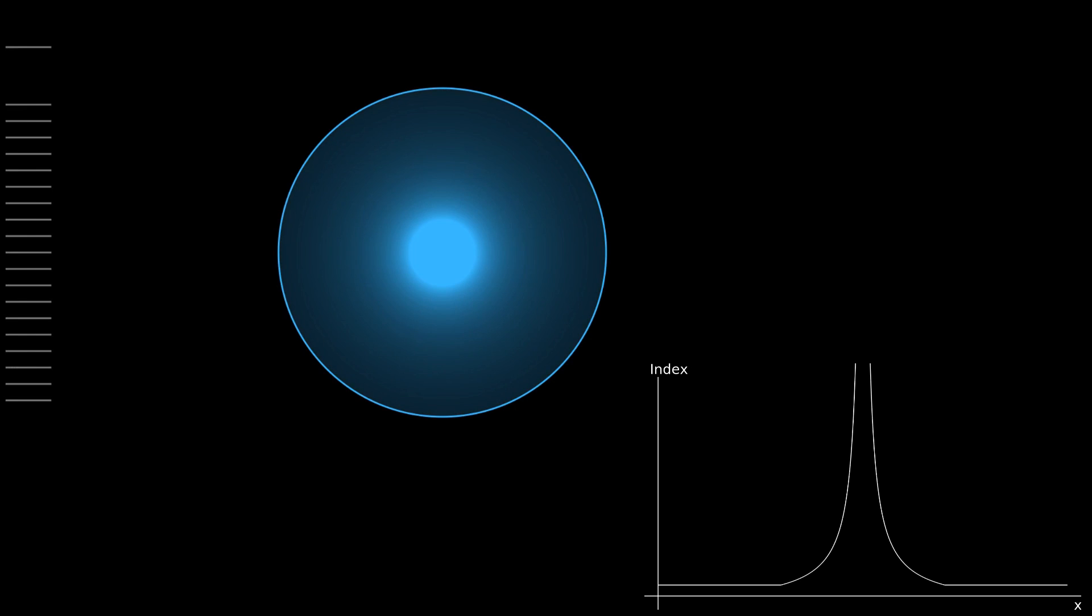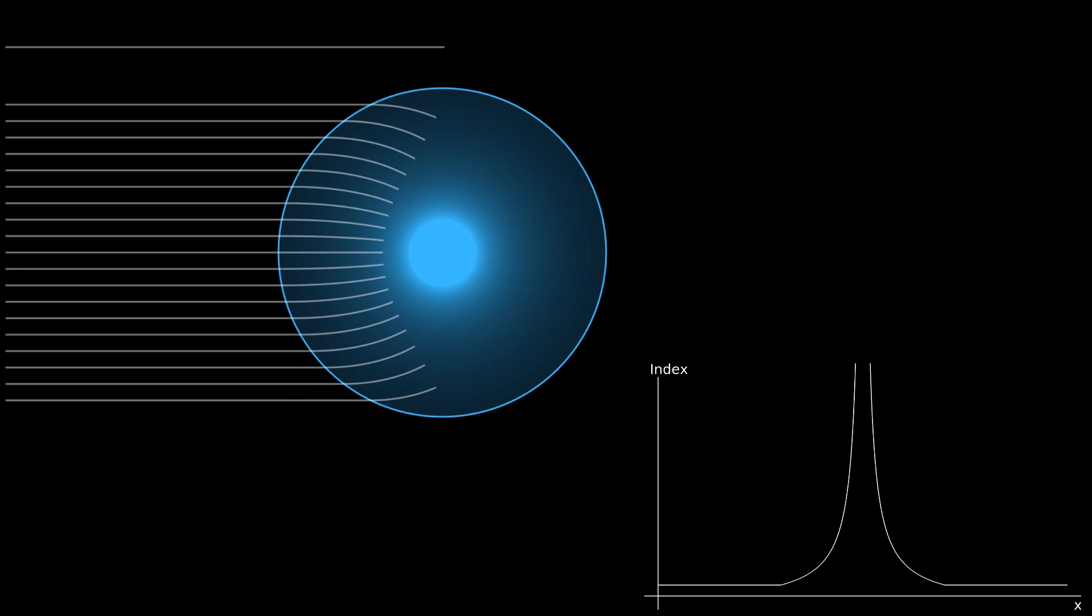Let's start with a seemingly simple case, where the index of refraction at any given point within the lens is equal to the lens's radius over that point's distance from the origin. When light enters, it actually cannot escape, and instead swirls further and further into the depths of the lens.